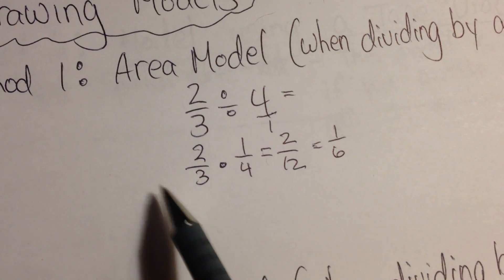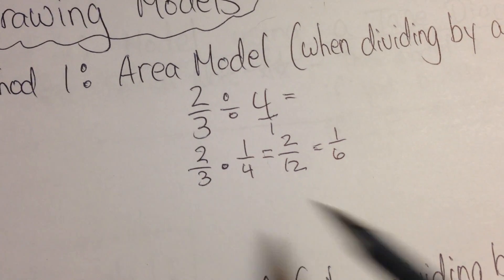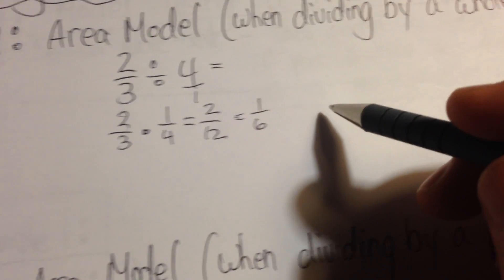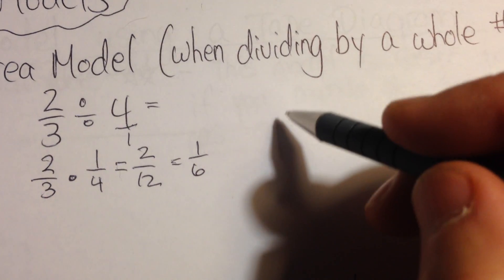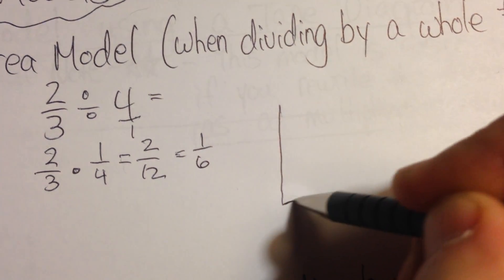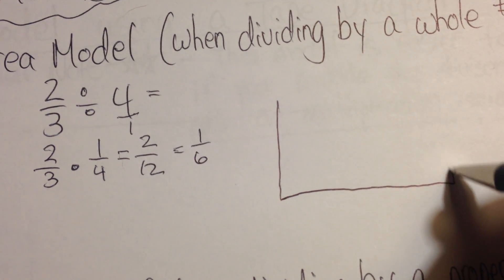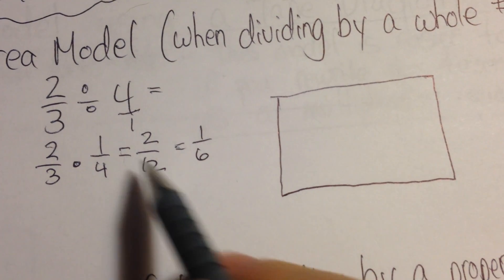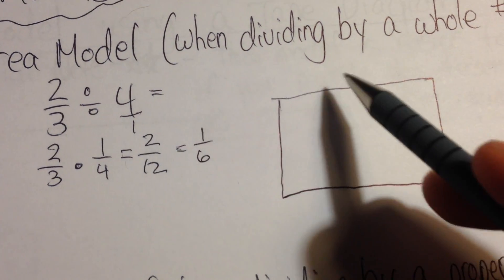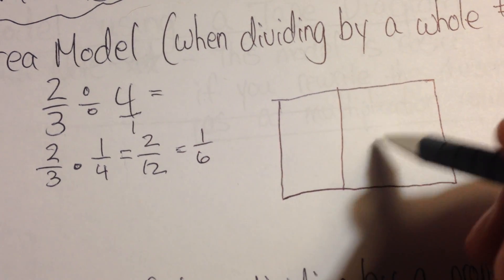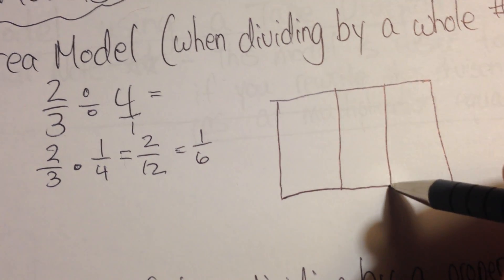So when I go to draw this I need to draw 2/3. So the best shape to draw area models would be to use a rectangle. So I'm going to slide over here a little bit and I'll draw my rectangle, and after I draw it I want to break my rectangle into thirds. So I'm going to have thirds that I break this into. It's important to label.